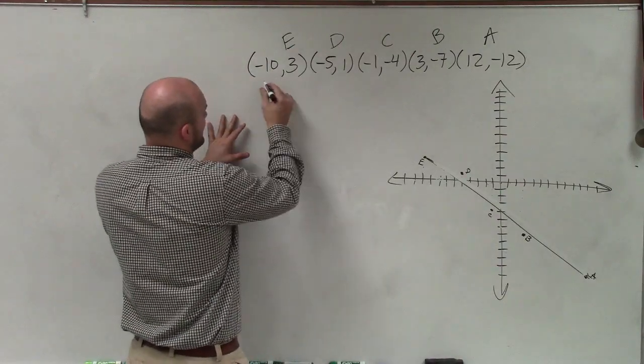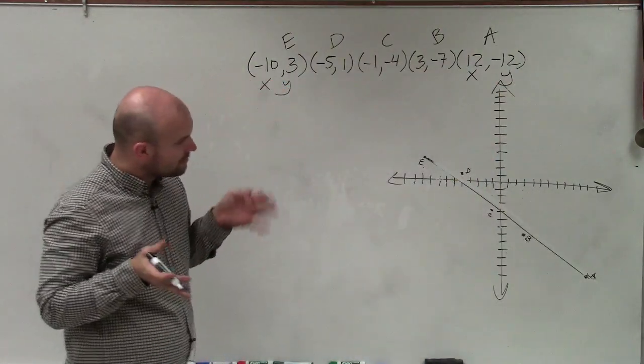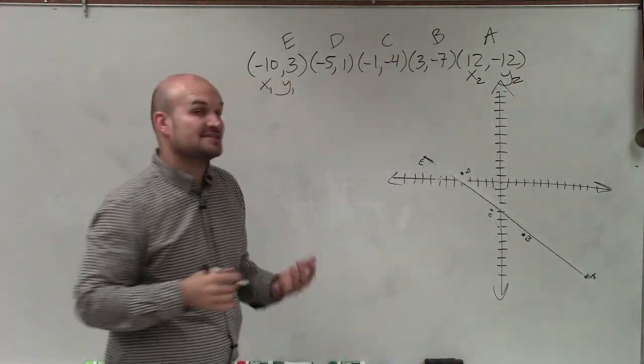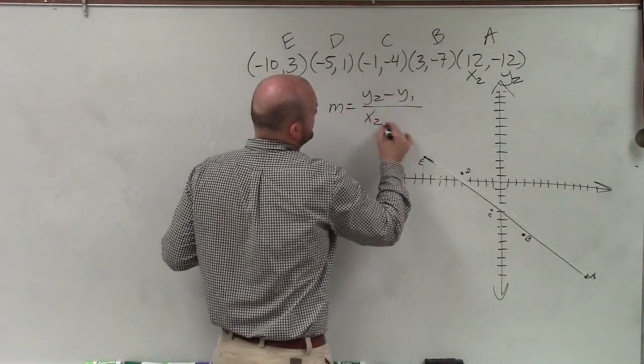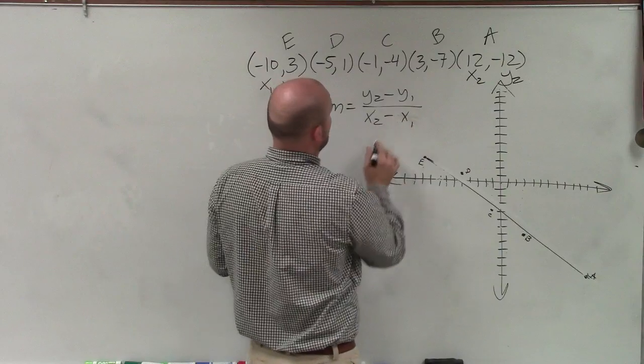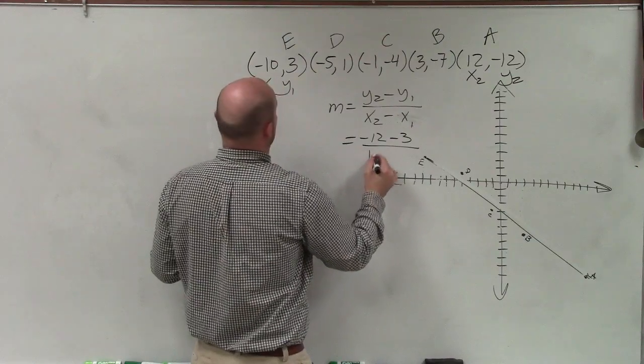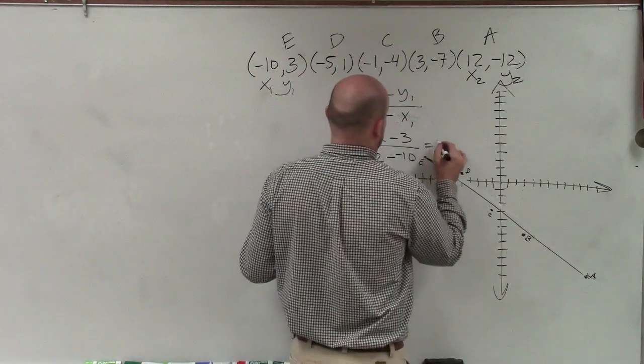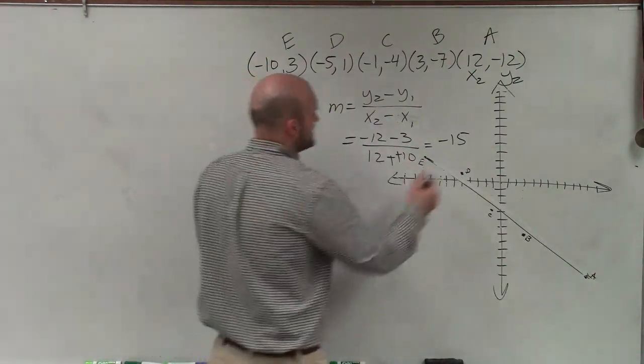What's nice about choosing a best fit line between two points is we can write a linear equation to model our best fit line. So remember, e is negative 10, 3, which we'll say is x1, y1, and a I'll represent as x2, y2. When we need to write an equation between two points, we need to differentiate our two points. The first thing I want to do is determine the slope, which is the change in the y coordinates over the change in the x coordinates. So I have y2, which is negative 12, minus 3, all over x2, which is 12, minus negative 10.